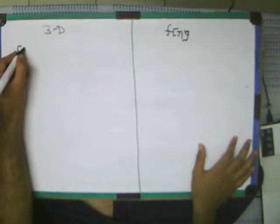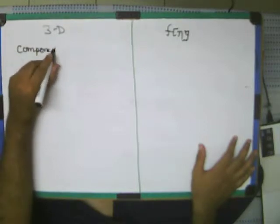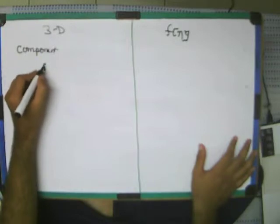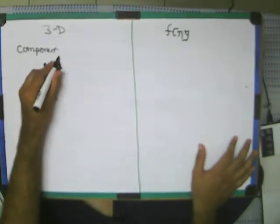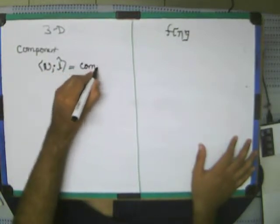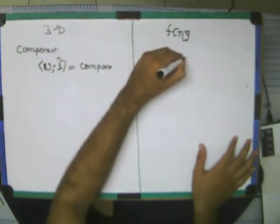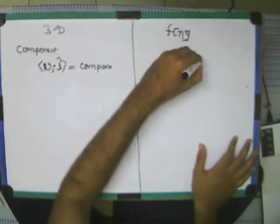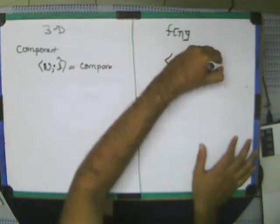How to find the component? What we did is dot product: v·i gives us the component in x direction. Similarly, here we do f(n)·δ(n-k) to get the kth component.